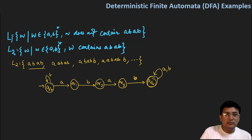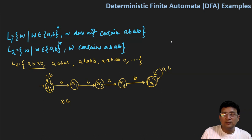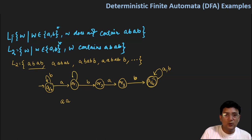If my string starts with 'b', it does not matter, because if my string does not start with 'a' and starts with 'b', it may quite be possible that I get 'a' after this. Now, after getting an 'a', let's say my string is double 'a' — 'aa'. This means the string is not starting with 'ab'. So what should I do? I should remain at q1 state, since it is quite possible that I get a 'b' after this.